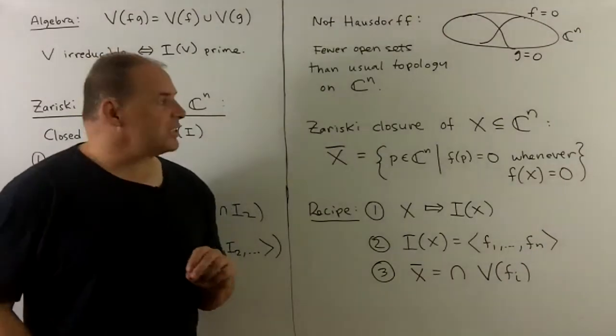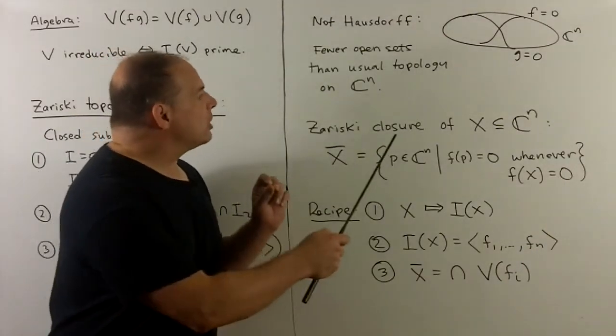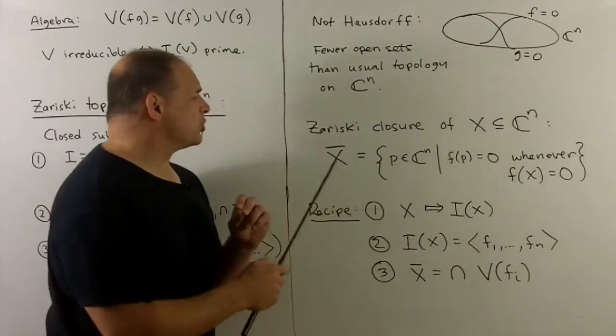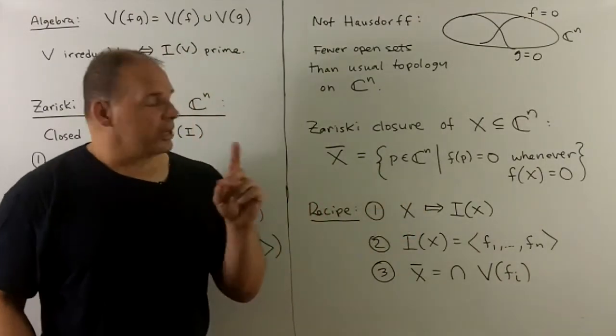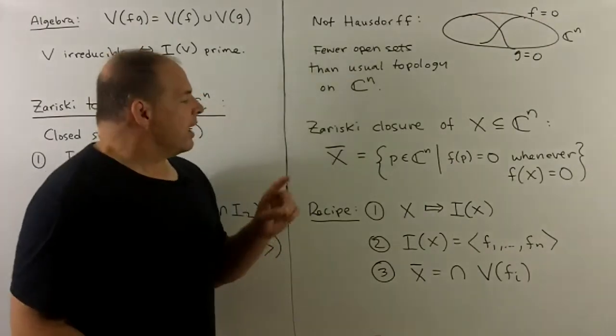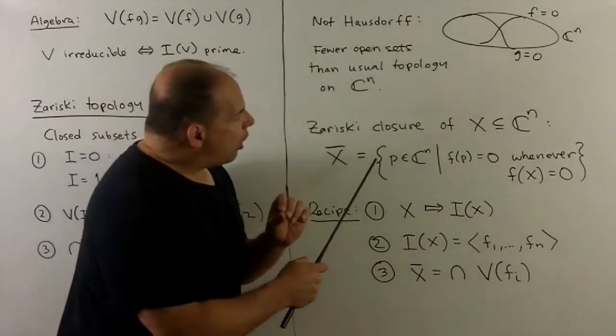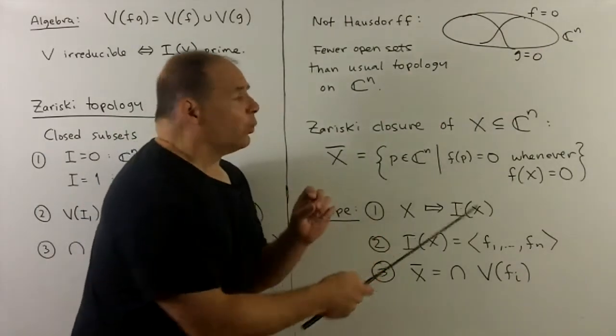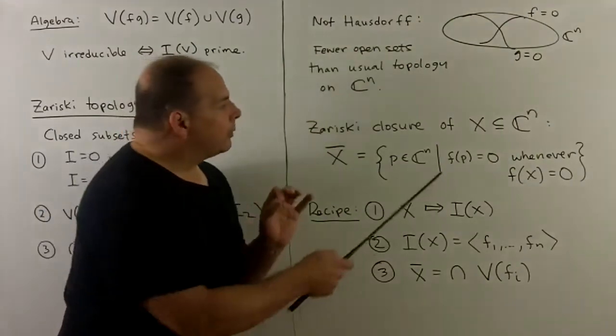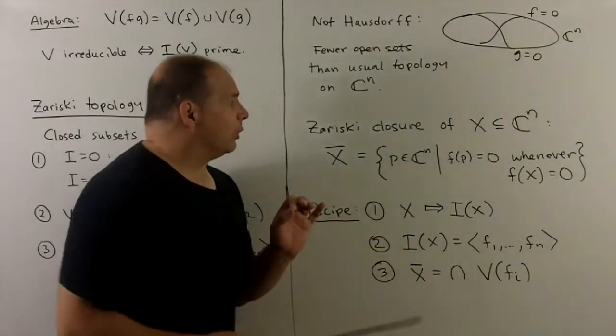Big tool for us is going to be the notion of Zariski closure of a subset inside of CN. Now the way I get the Zariski closure, if I have a subset X, we're just going to take X itself, and then we're going to take all points such that whenever I have a polynomial that vanishes on X, we'll want the points that vanish for all those polynomials.